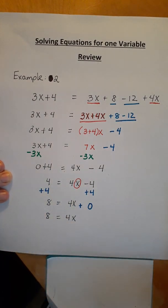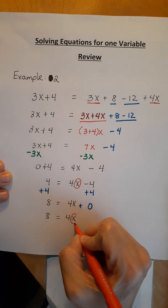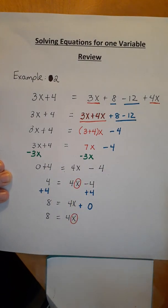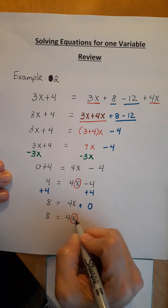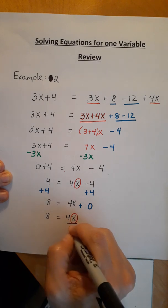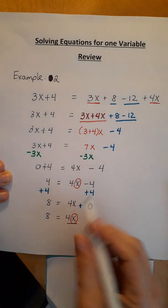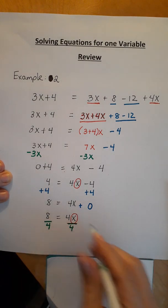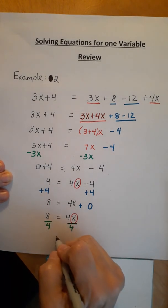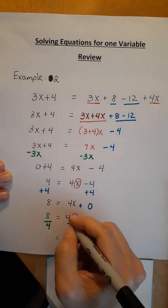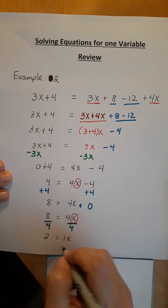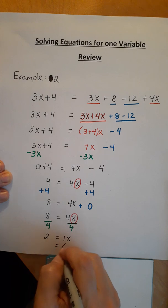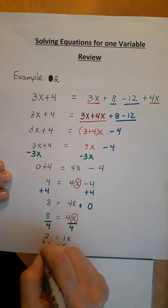I still want to get that x alone. What's next to the x? The 4. How do I break it apart? It's 4 times x. So I'm going to do the opposite. I'm going to divide by 4. 4 divided by 4 is 1x. 8 divided by 4 is 2. And x is equal to 2. There's my answer.